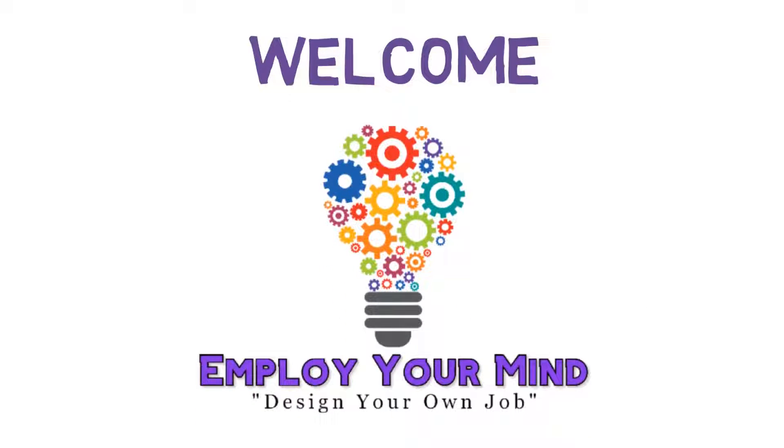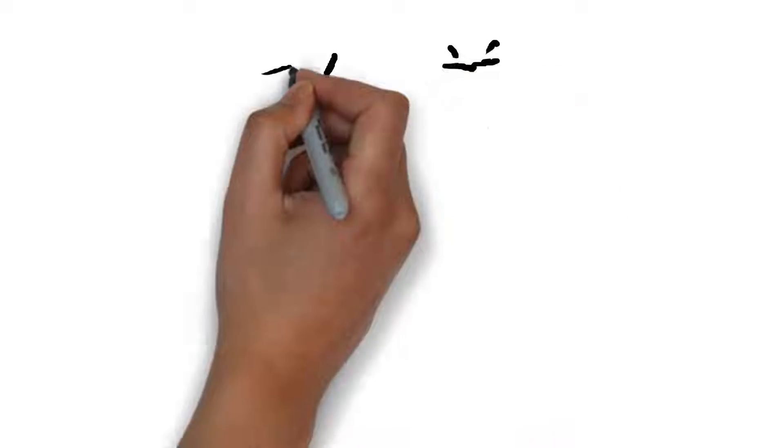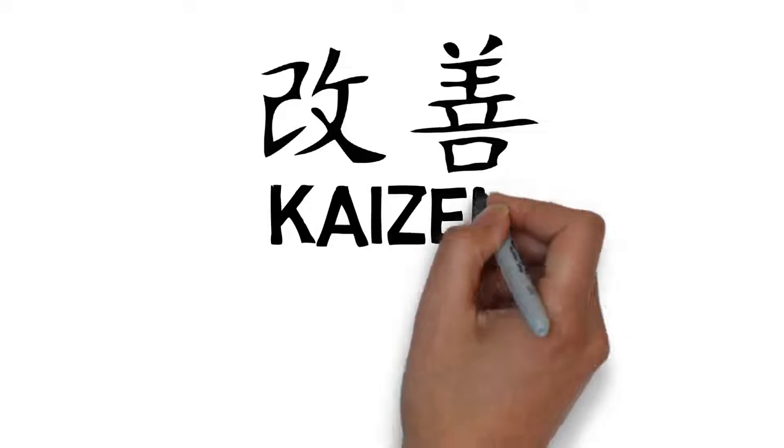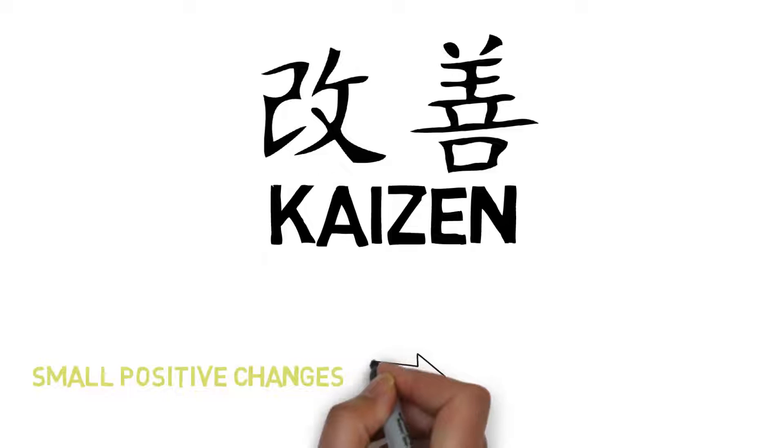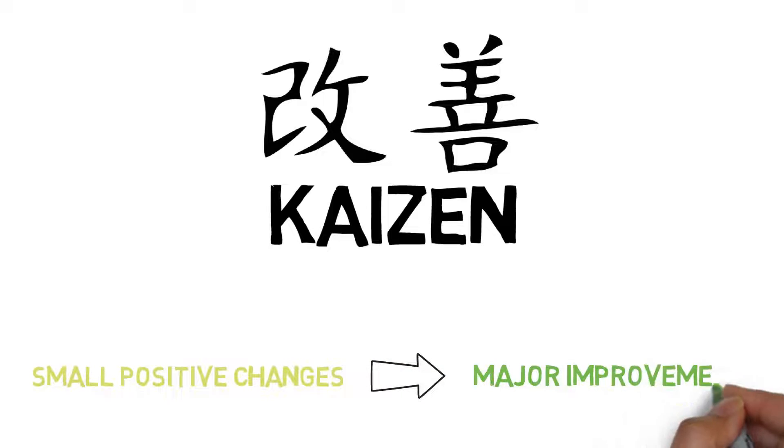Hello guys and welcome to Employ Your Mind. On this video we will talk about the Kaizen system. Kaizen is an approach to creating continuous improvement based on the idea that small ongoing positive changes can reap major improvements. Let's get to it.